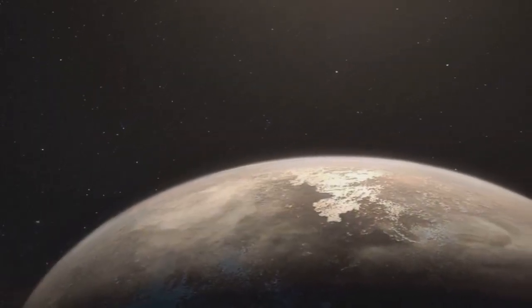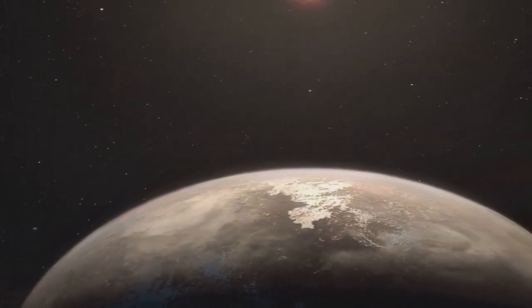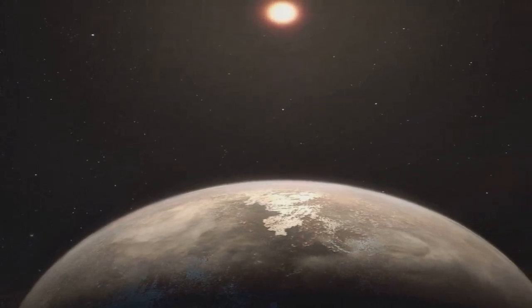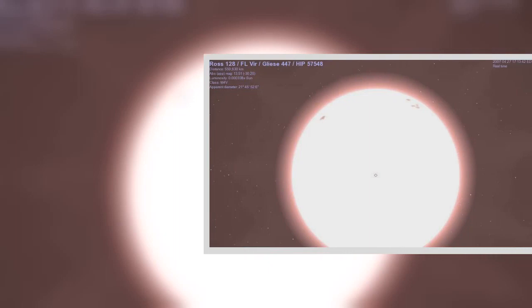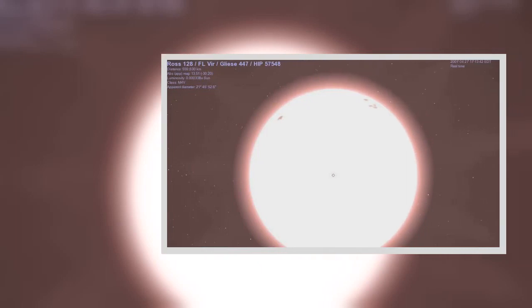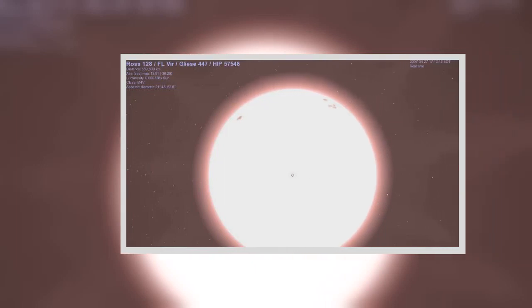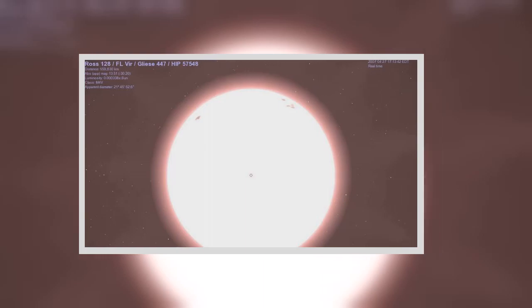Next, astronomers want to study the atmospheric composition and chemistry of suitable nearby worlds like Ross 128b. The detection of gases such as oxygen could potentially point to biological processes on planets orbiting other stars.